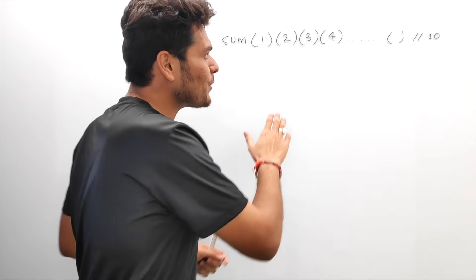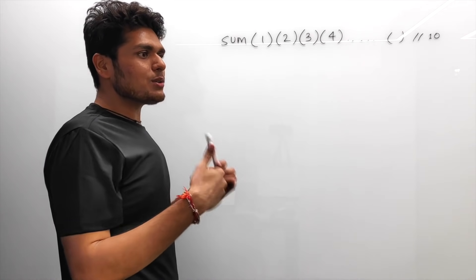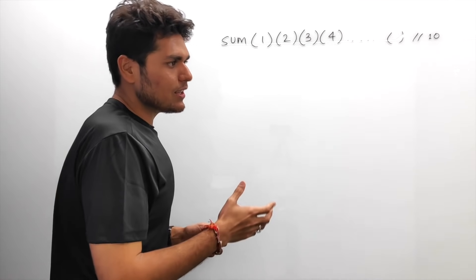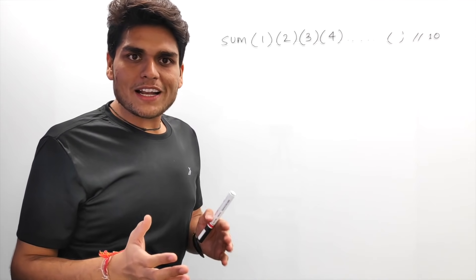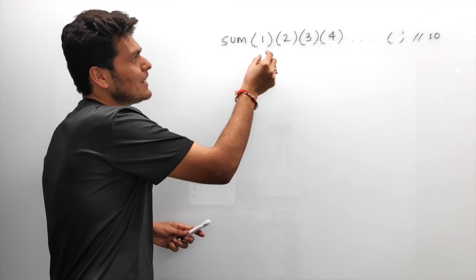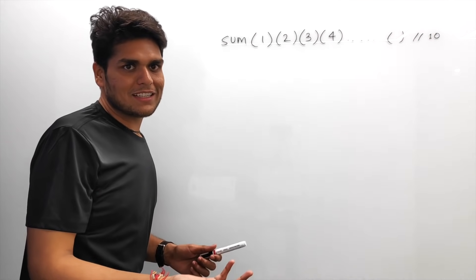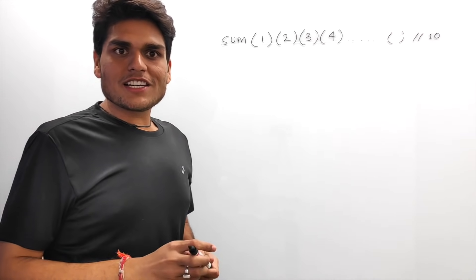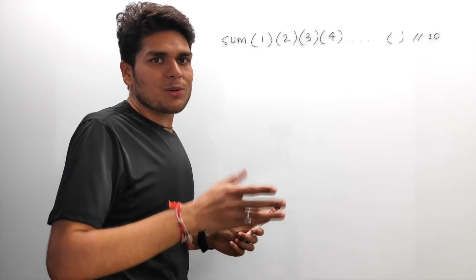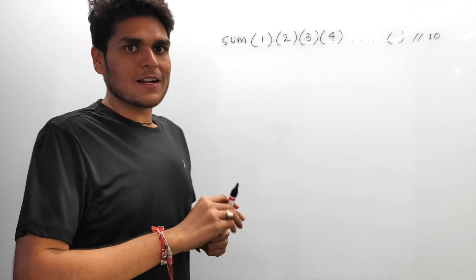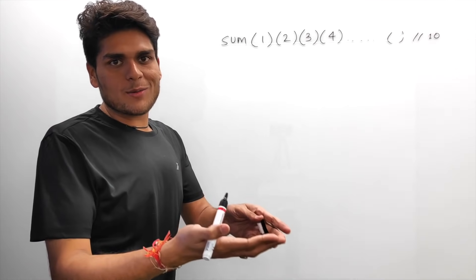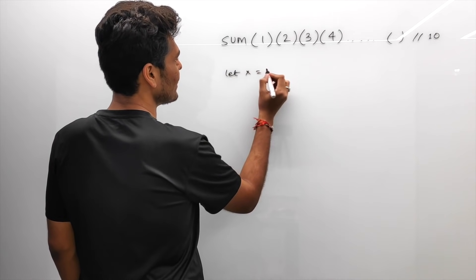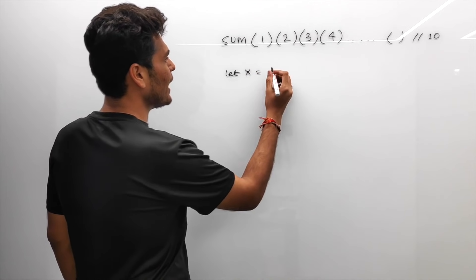Whenever you see this type of question in an interview, first try to think about what this function is trying to do and how it is executing things. People who are not from a JavaScript background may find it a little weird — how can we call a function like this? In JavaScript, functions are first-class objects, also called first-class functions, meaning a function behaves just like any other variable or object.